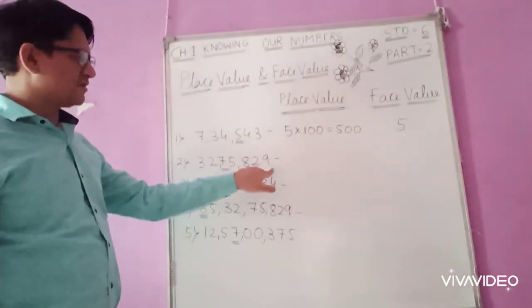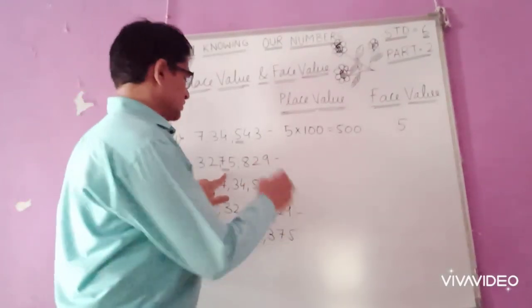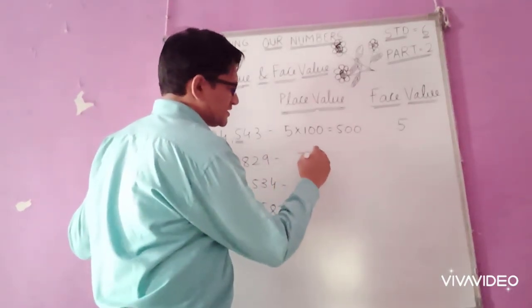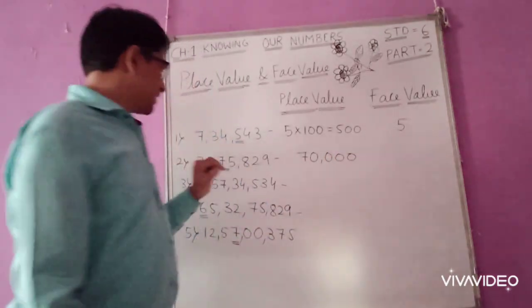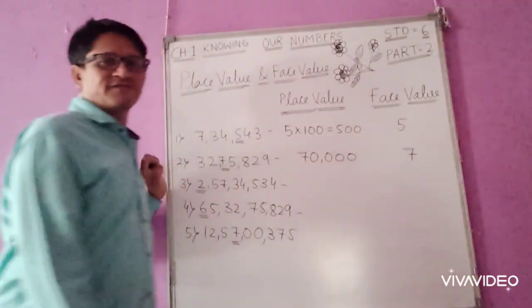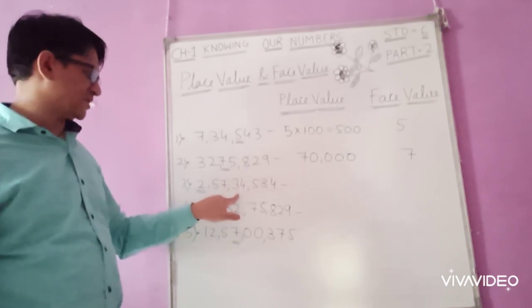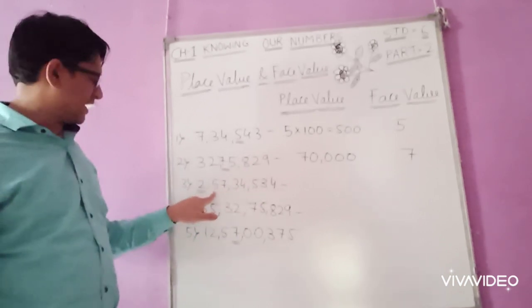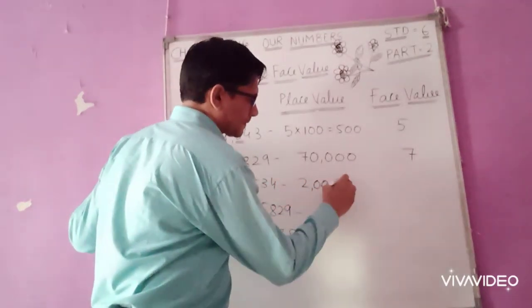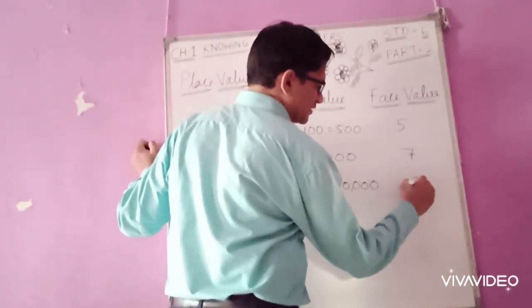For the digit 7 in the ten thousands place: place value is 7 × 10,000 = seventy thousand. The face value of 7 is 7 itself. For digit 2 in the crores place: place value is 2 × 1 crore = two crore. The face value of 2 is 2.